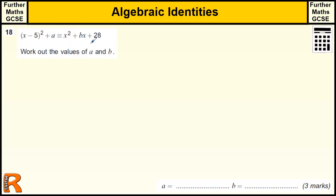So that means that this side is always equal to this side, and this side is always equal to this side. So essentially what we've got to do is we've got to equate the coefficients of x.